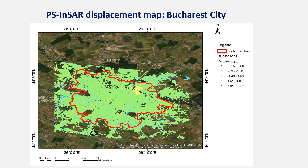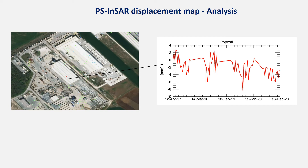Land cover changes are observed during the COVID pandemic period, with more buildings appearing in the peri-urban areas in the south, north, west, and east. Local interaction with underlying geology and natural flood instability processes predominates in the western and north-eastern sectors.